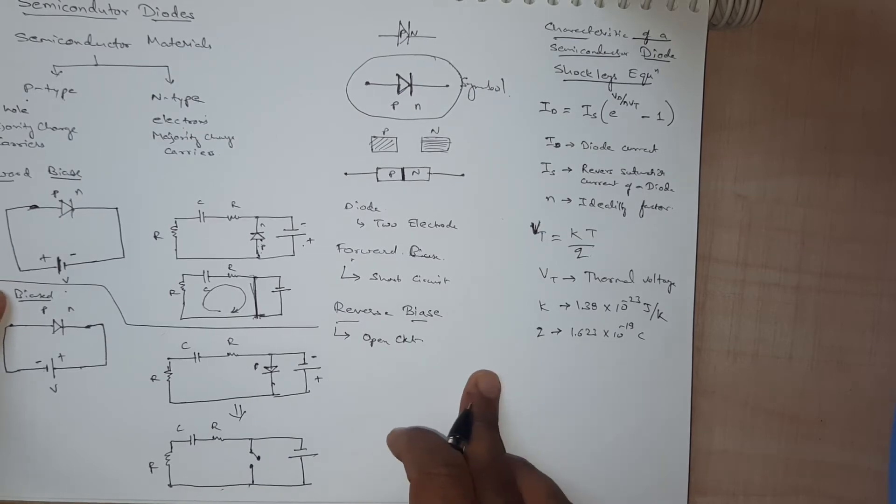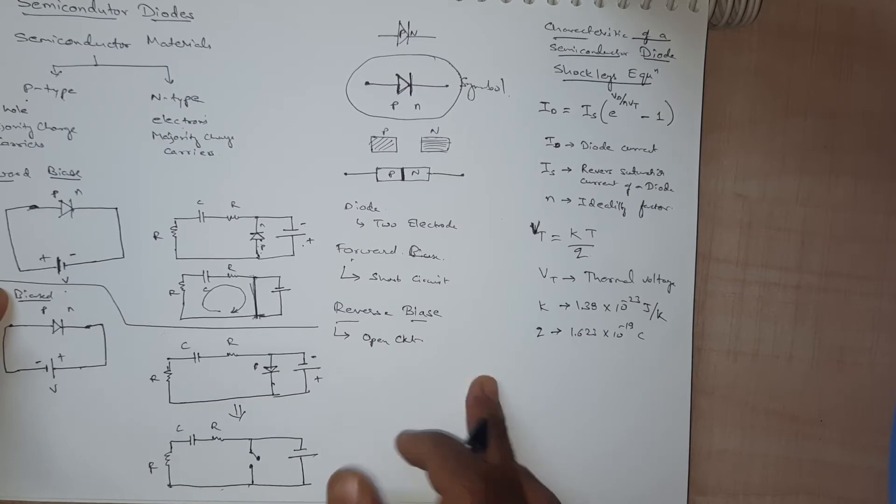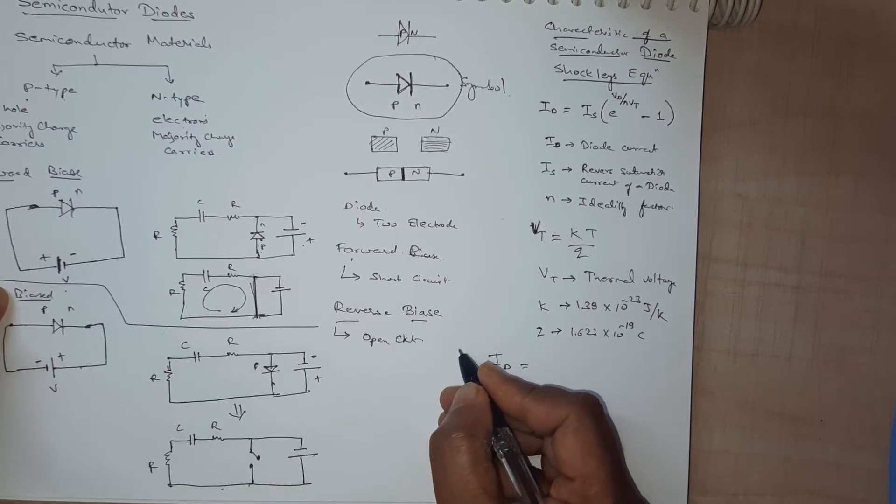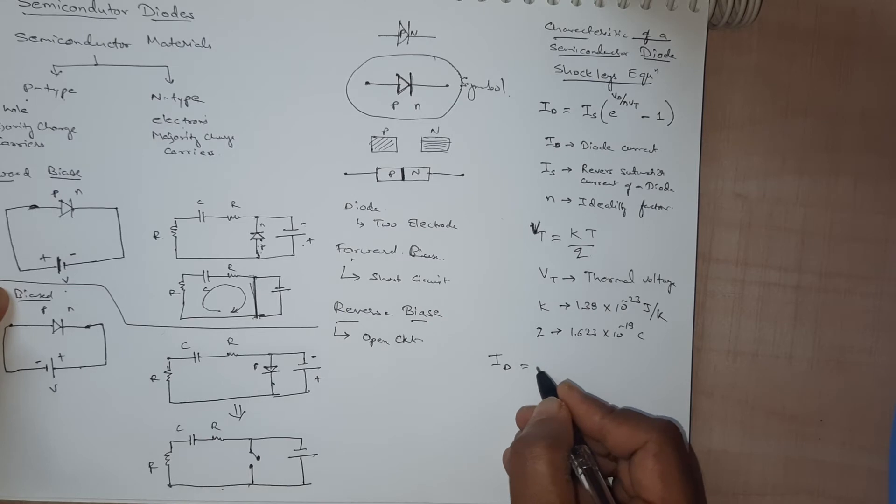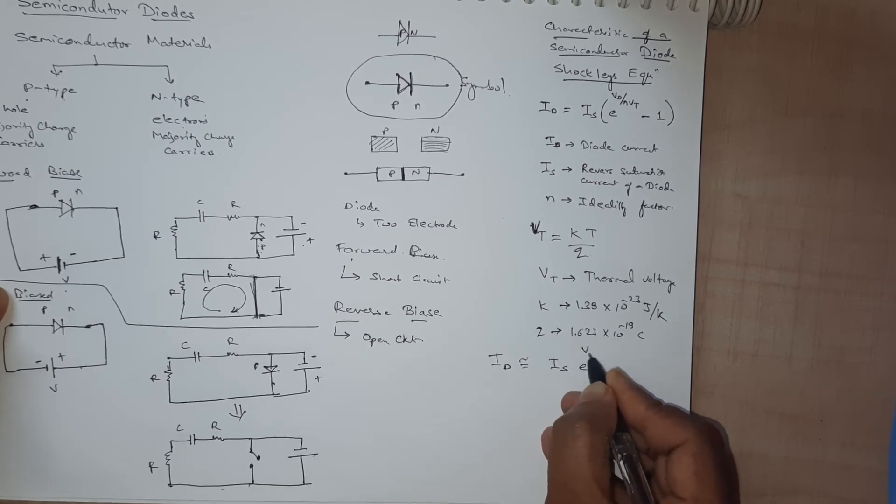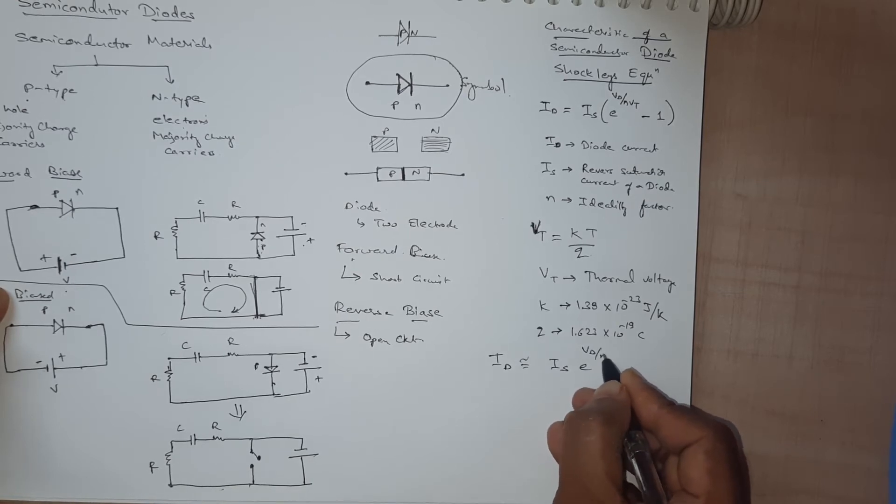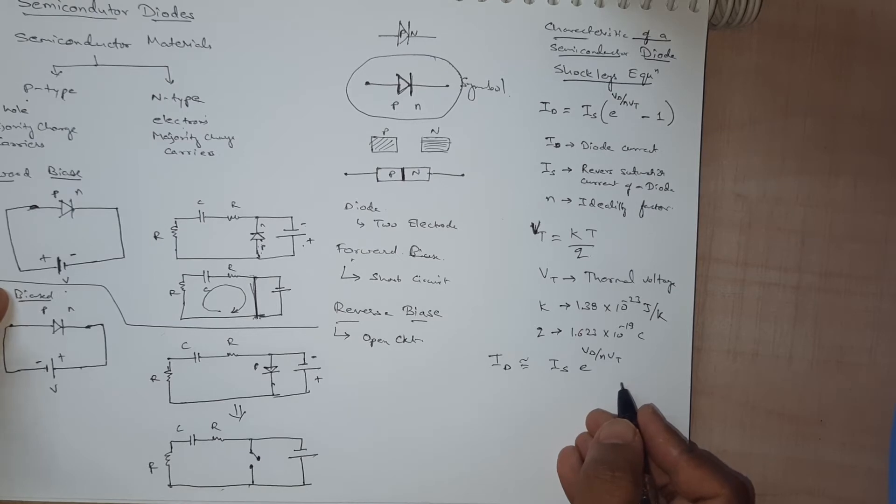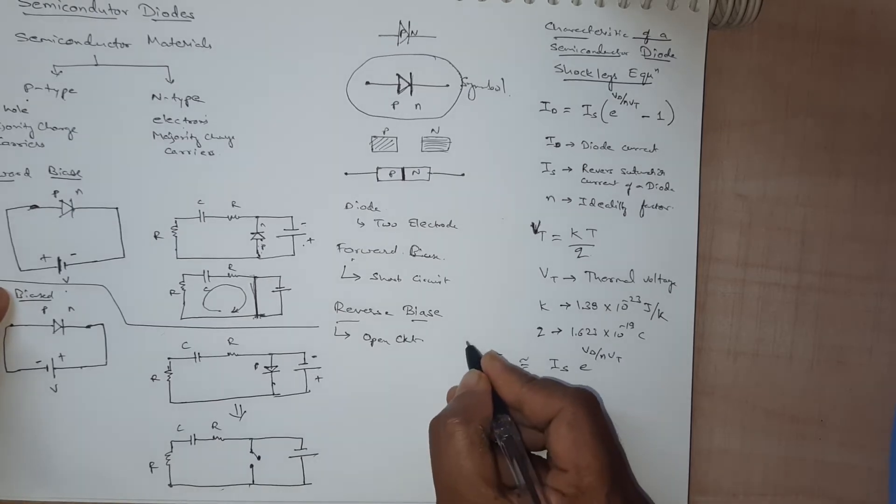And for the forward bias condition your diode current is given or almost similar to is into e to power vd divided by nvt. And for voltage equal to 0 when there is no voltage, for positive voltage...